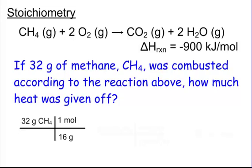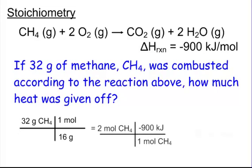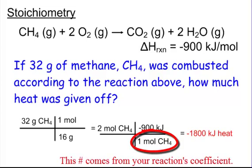That gives us two moles. Since there's negative 900 kilojoules for every one mole of methane, we get negative 1800 kilojoules of heat released. Now, a note: if we were doing this calculation for water instead, it would be negative 900 kilojoules for every two moles of water, because there are two moles of water in the reaction. And that is our stoichiometry.